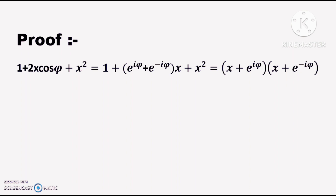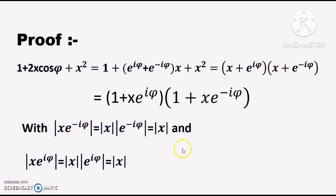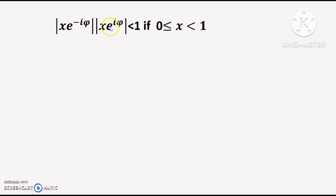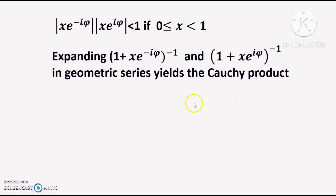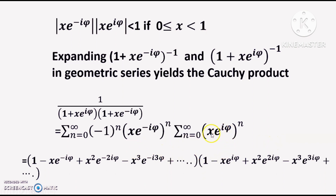Using that identity in the expression 1 + 2x cos φ + x², we get (1 + xe^(iφ))(1 + xe^(-iφ)). We note that the modulus of xe^(-iφ) equals |x|, and we require |x| < 1 for x in [0, 1), because otherwise the geometric series will not hold — the Cauchy product in the geometric series would be divergent. Using the Cauchy product I can expand this total product.